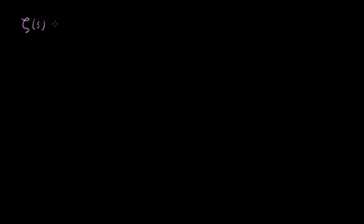Last time we derived the Euler product formula for the Riemann zeta function. What that looked like was that the zeta function, ζ(s), which is equal to the sum from 1 to infinity of 1/n^s, we found that this whole thing was equal to a product over every prime number of 1/(1 - p^(-s)).